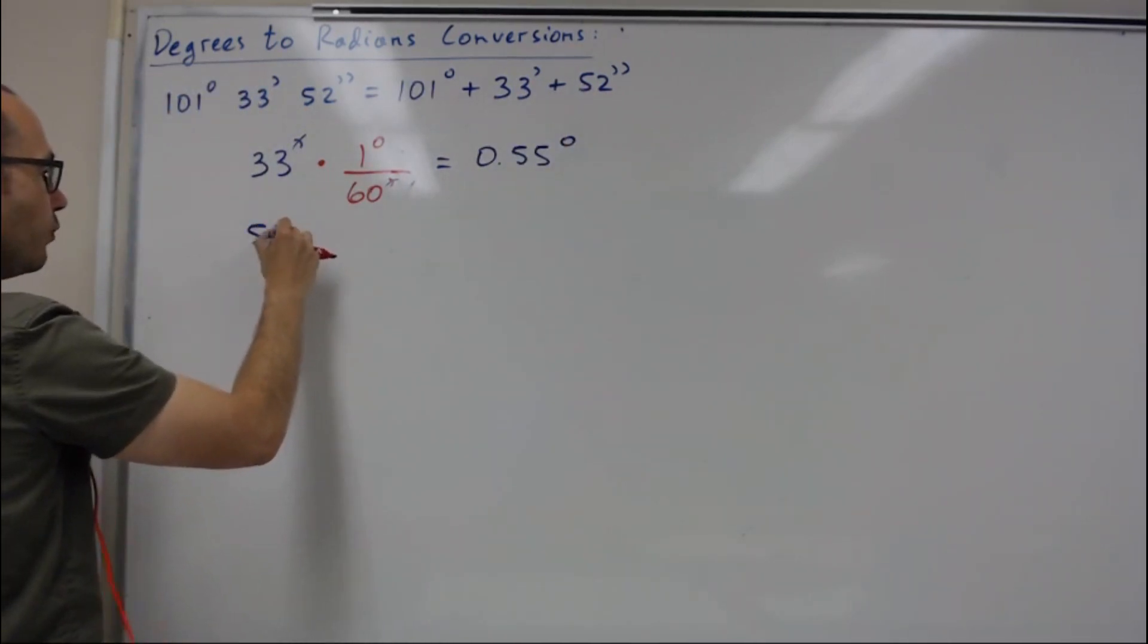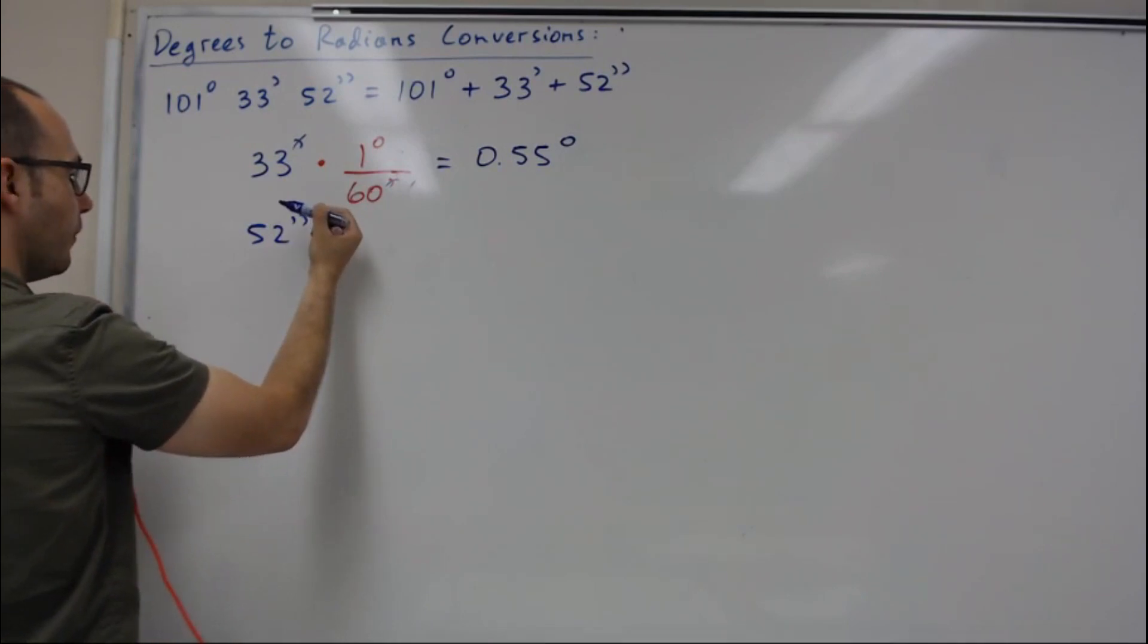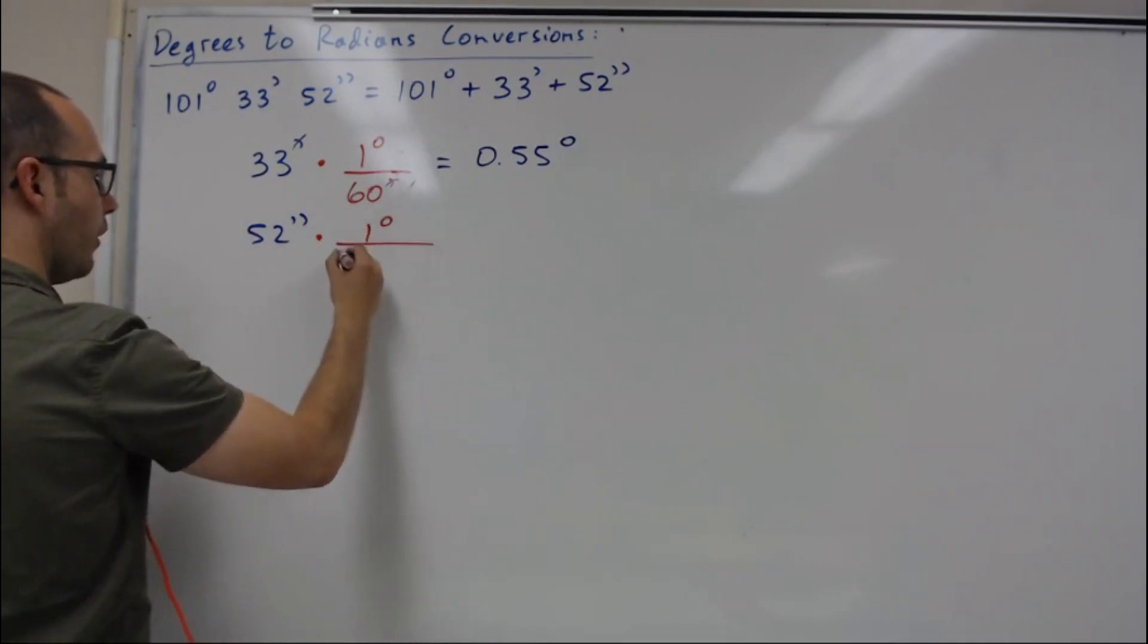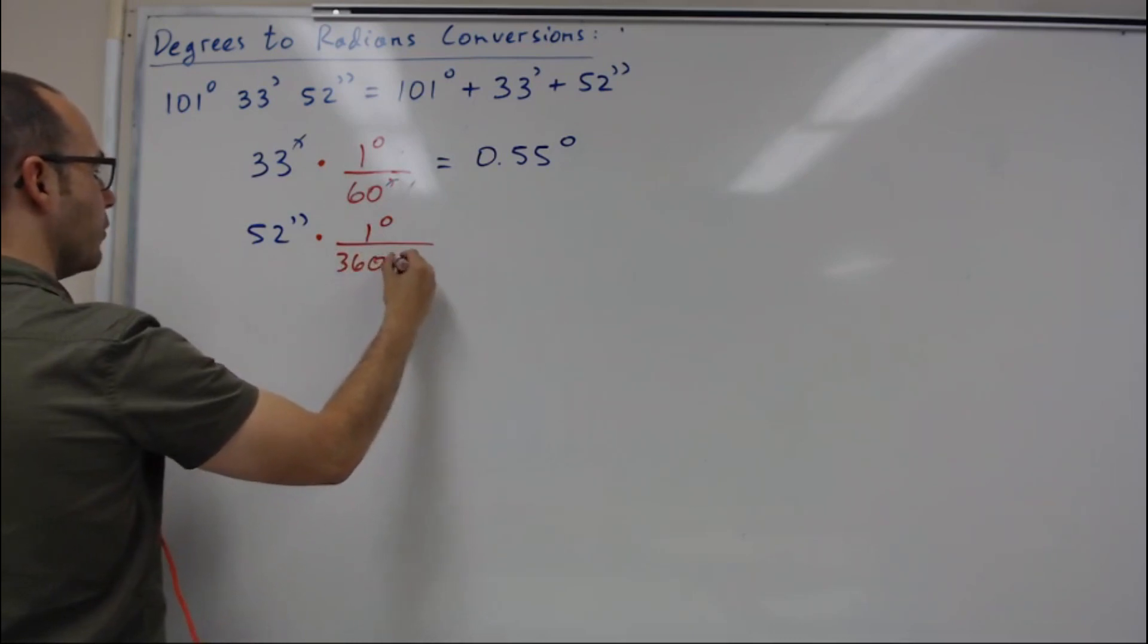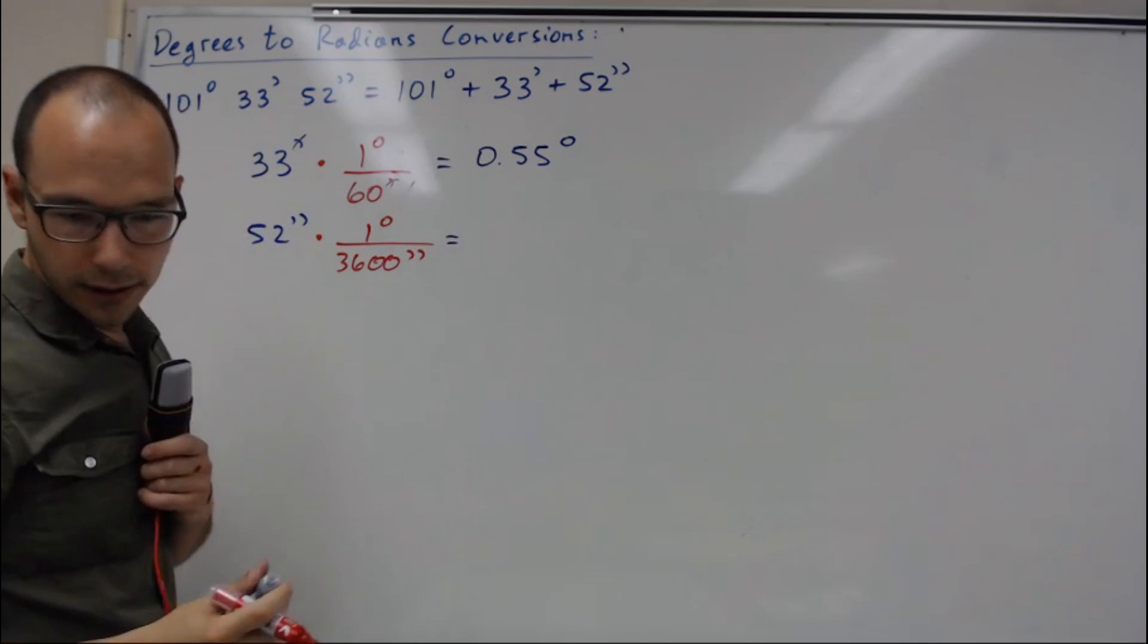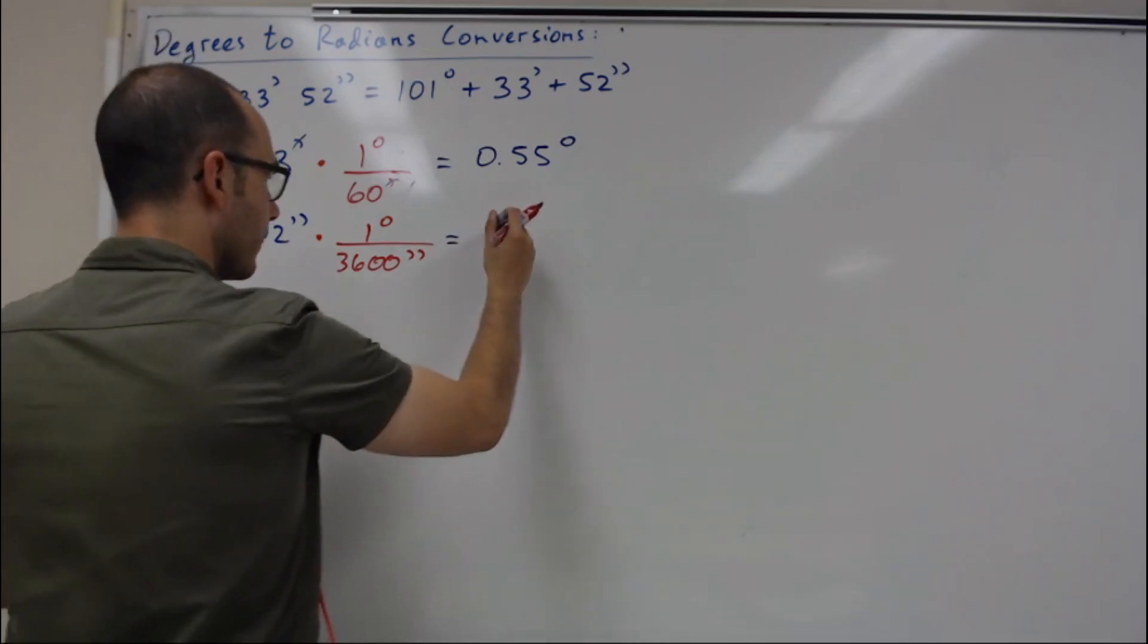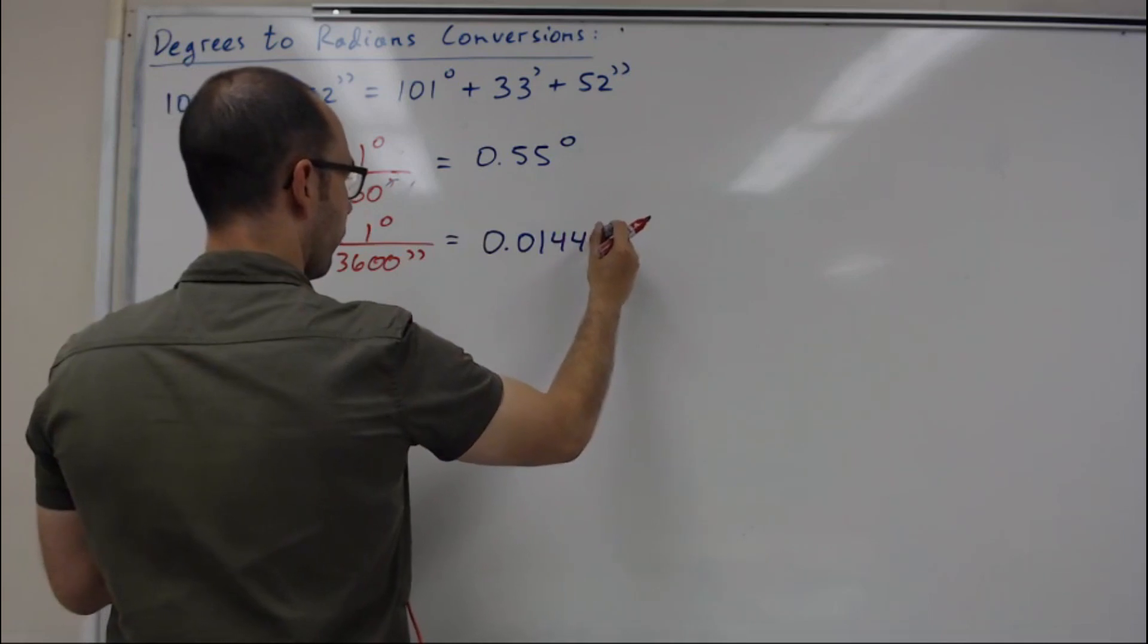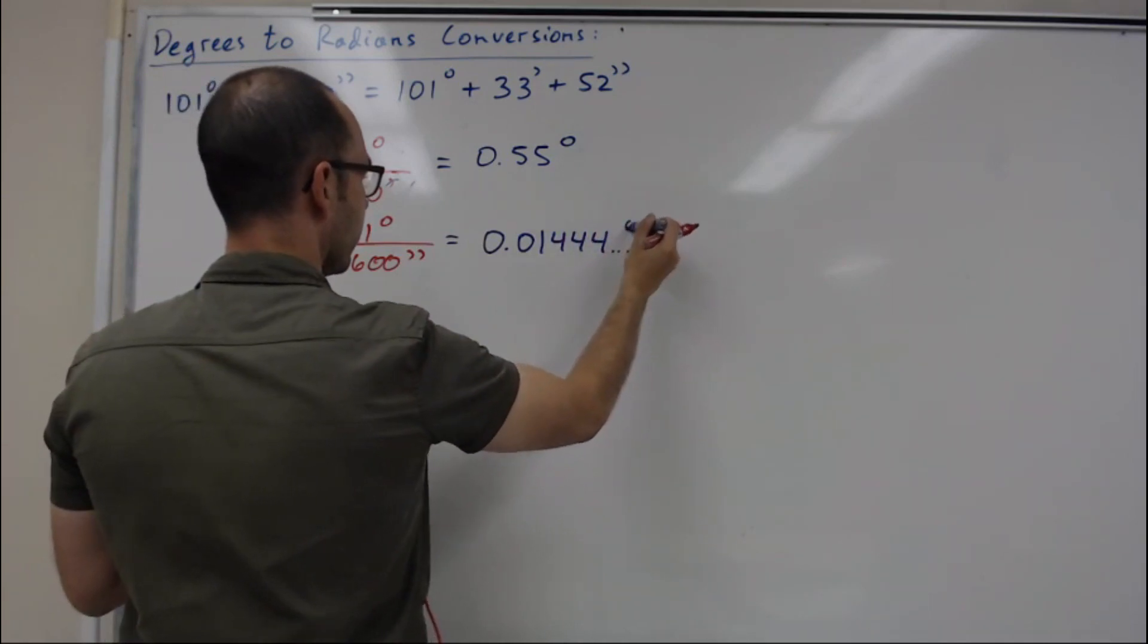I'm going to convert 52 seconds. I'm going to multiply that by 1 degree for 3600 seconds. So it's going to be equal to 0.01444 degrees.